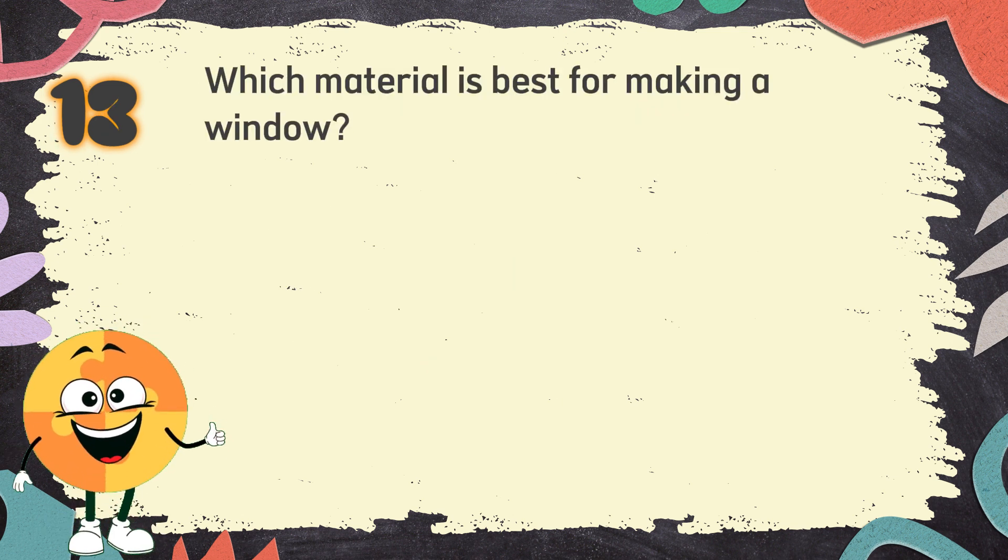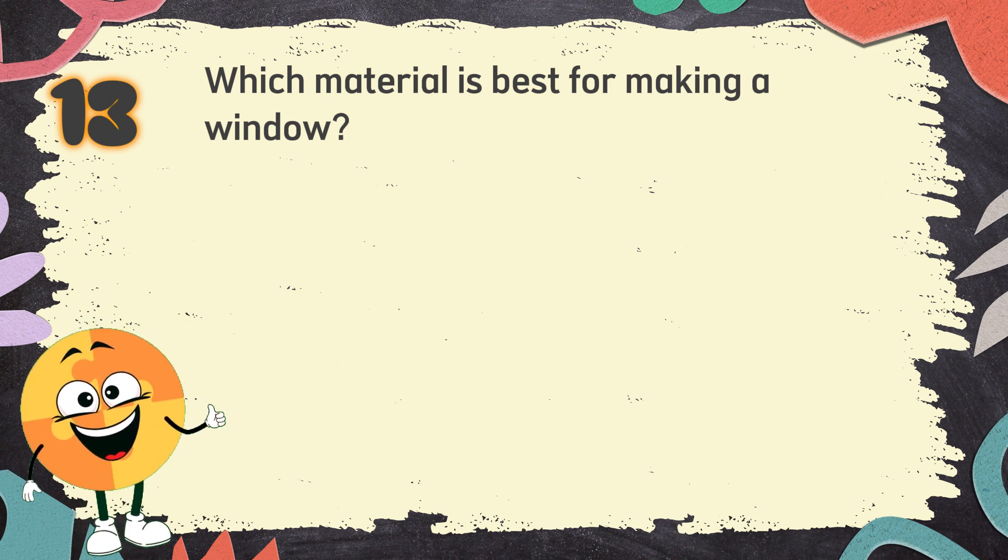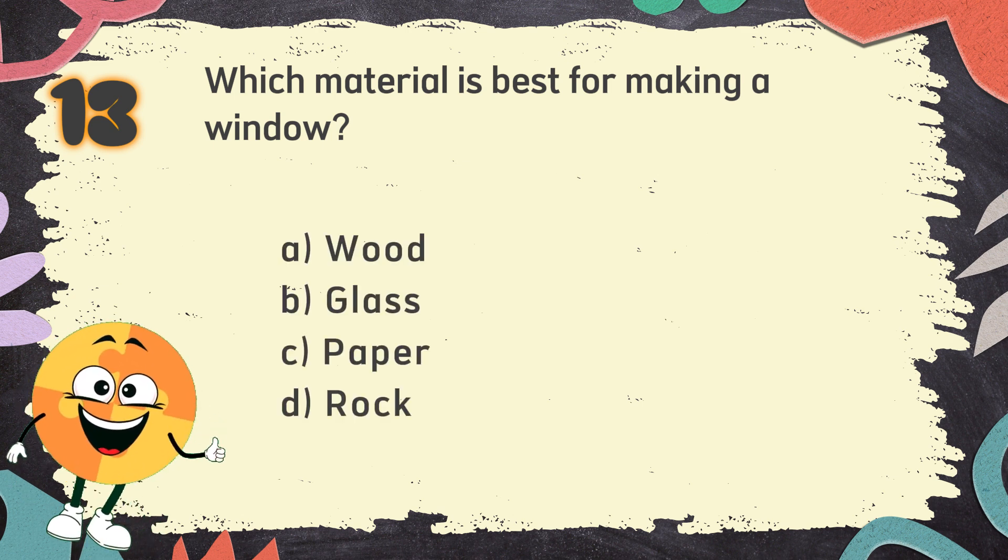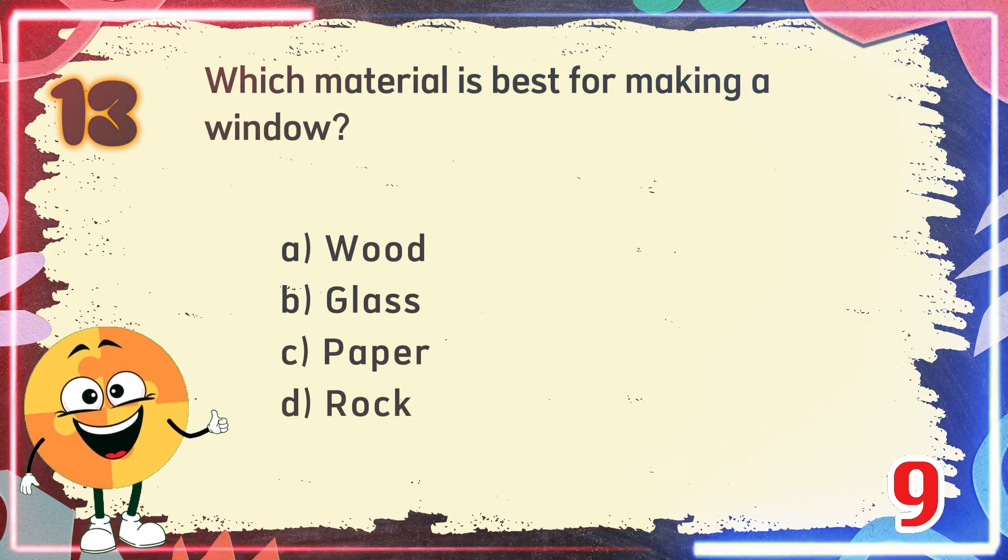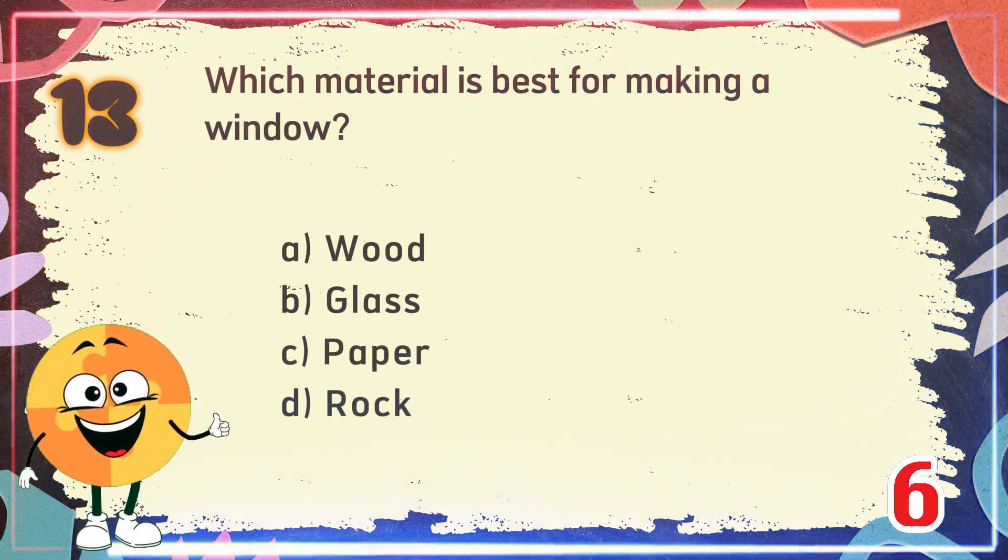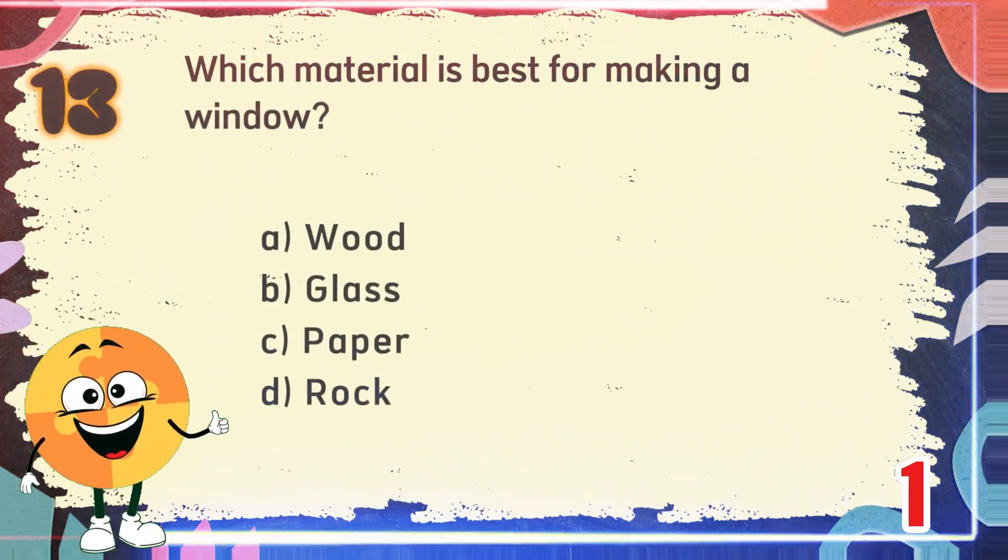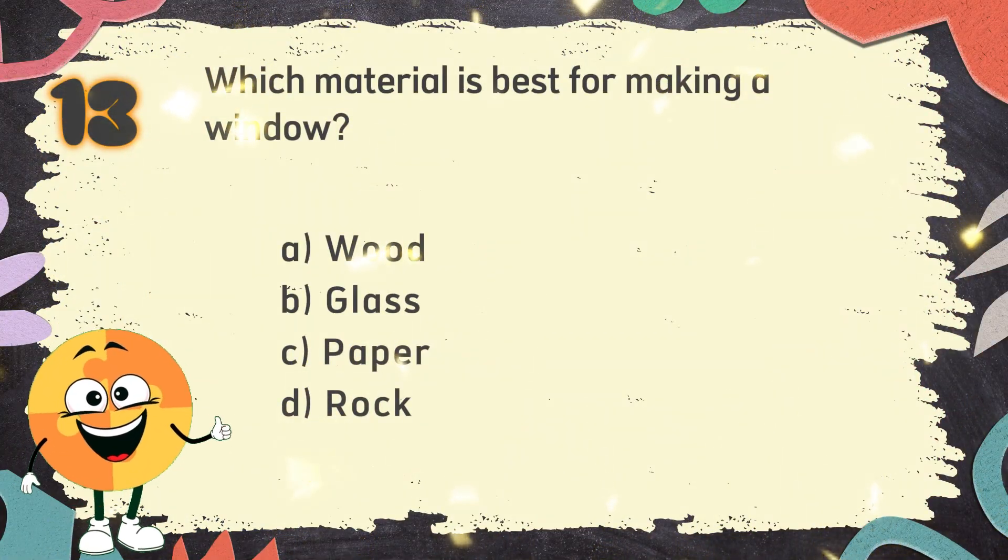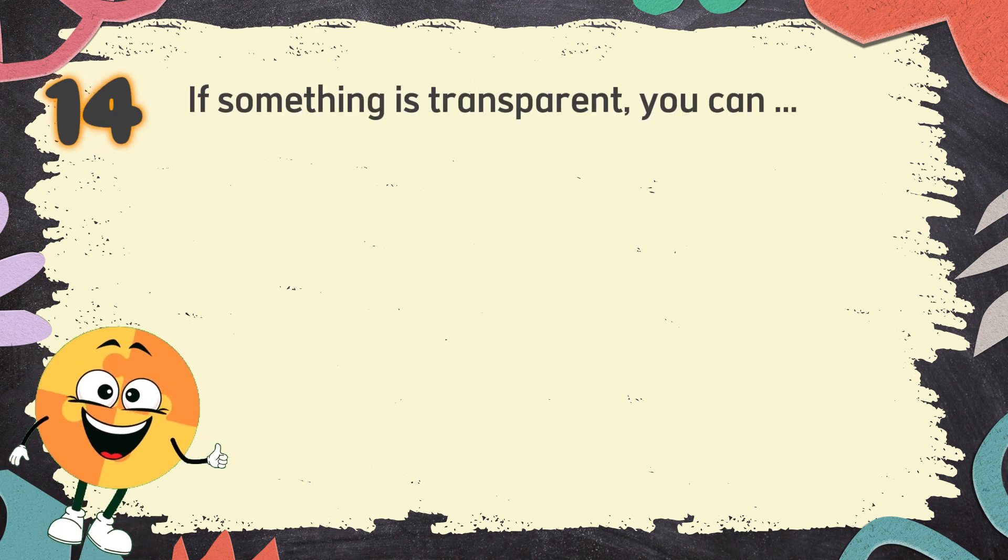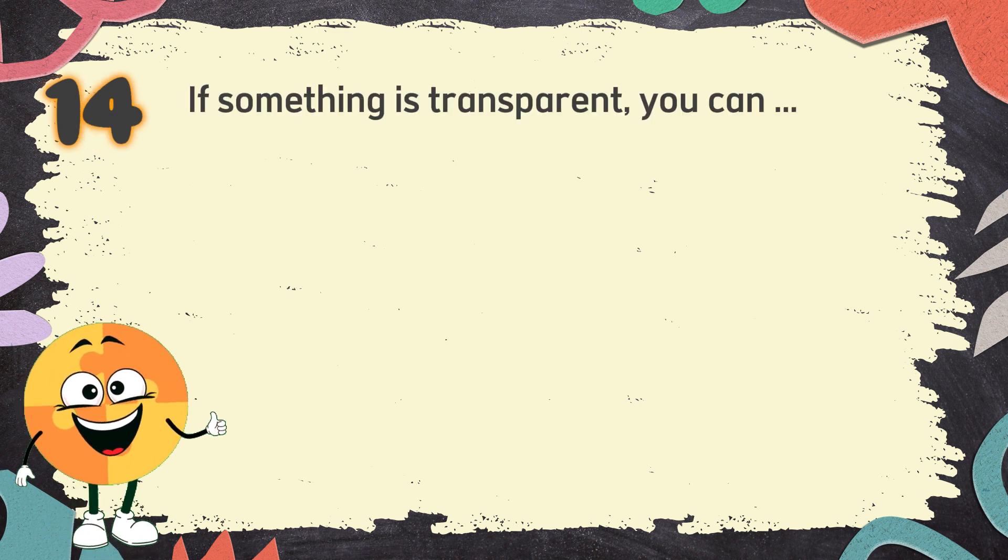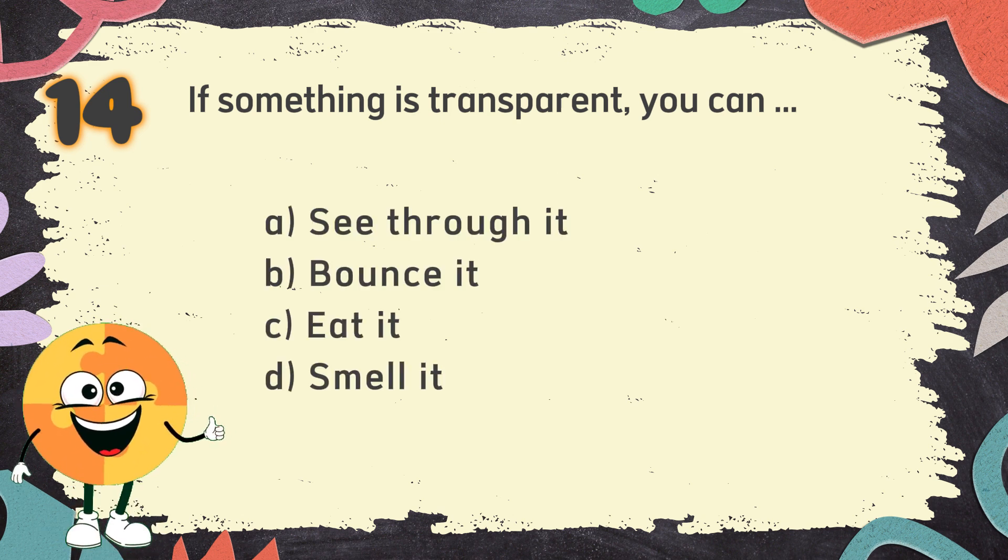Number 13. Which material is best for making a window? The choices are A. Wood, B. Glass, C. Paper, D. Rock. The correct answer is B. Glass.